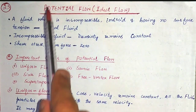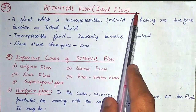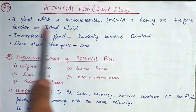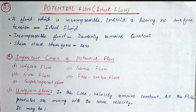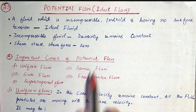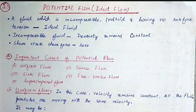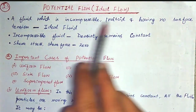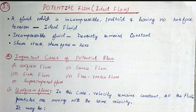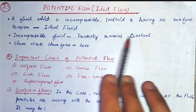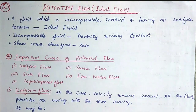First, we will discuss what potential flow or ideal flow means. A fluid which is incompressible, inviscid, and having no surface tension is known as an ideal fluid. Incompressible means zero viscosity and no surface tension. Incompressible fluid means the density is constant — it is not varying from place to place or time to time.